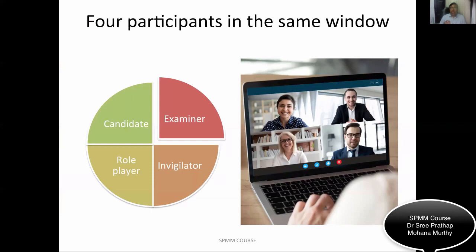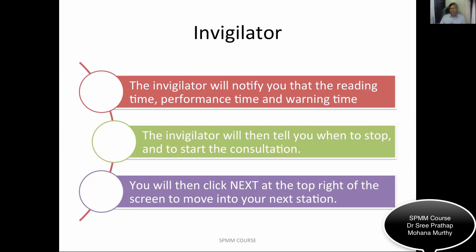Normally in face-to-face examinations there are three participants — candidate, examiner, and role player. But in this digital examination there will be four: candidate, examiner, role player, and invigilator. The invigilator notifies reading time, performance time, and warning time, and tells you when to stop and start. Once you finish one consultation, click 'Next' at the top right of the screen to move to the next station. At the end of eight stations, one circuit will stop automatically.